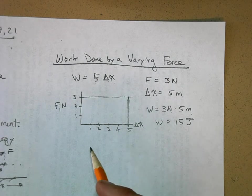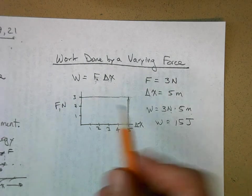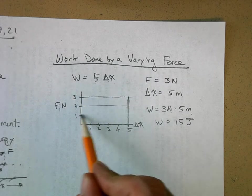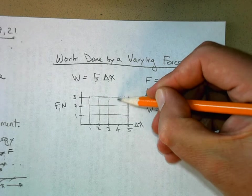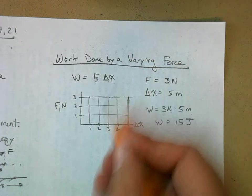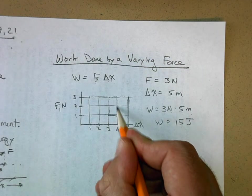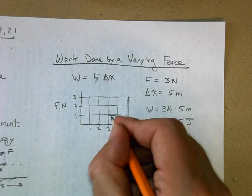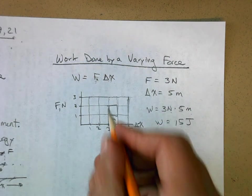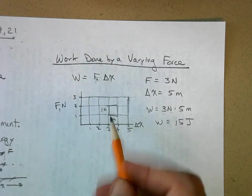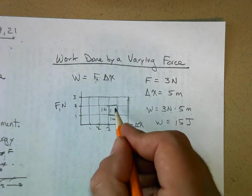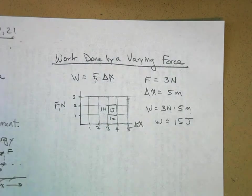Take a look at this graph again. When you multiply three times five, you're really getting the area of a rectangle. If I just look at a representative square, it's got a width of one meter and a height of one newton. One times one is one, so each little square represents a joule of work done.